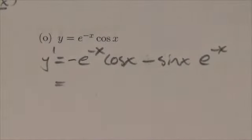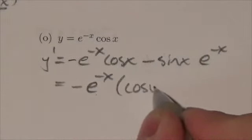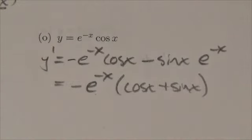And now what I see from that is I see a common negative e to the negative x, and I'm left with cosine of x plus the sine of x. And there's really not much more I can do to make that any simpler.